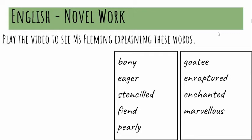A goatee is a type of beard — it's like a shape. Just like you can have different hairstyles, like plaits, straight hair, curly hair, a fringe, or a comb over, you can also have different shaped beards, and a goatee is one of those.